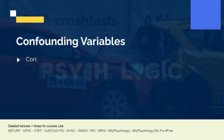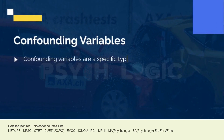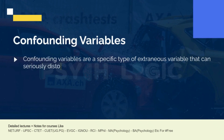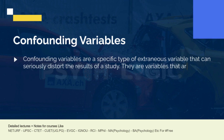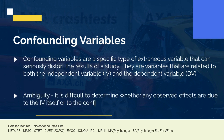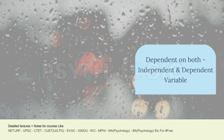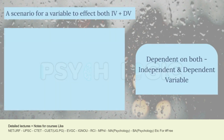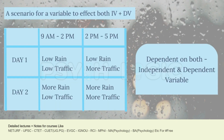Moving on to confounding variables. Confounding variables are specific types of extraneous variables that can seriously distort the results of a study because they are very hard to control, making it difficult to determine whether any observed effects are due to the independent variable itself or the confounding variable. In our example, we don't know exactly whether the accidents are a real rain effect or something else. A confounding variable is related to both the independent and dependent variables — for example, time of day: at some times of day there is more traffic on the roads, and at some times there is also heavy rain, while at other times there is no rain.